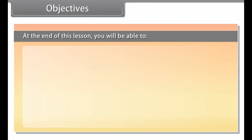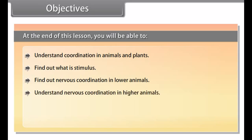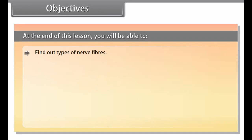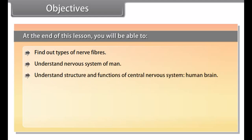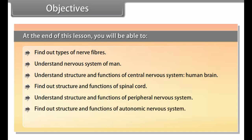At the end of this lesson, you will be able to: understand coordination in animals and plants; find out what a stimulus is; find out nervous coordination in lower animals; understand nervous coordination in higher animals; find out the unit of the nervous system; find out types of neurons; find out types of nerve fibers; understand the nervous system of man; understand the structure and functions of the central nervous system, human brain, spinal cord, peripheral nervous system, autonomic nervous system; and understand reflex actions.